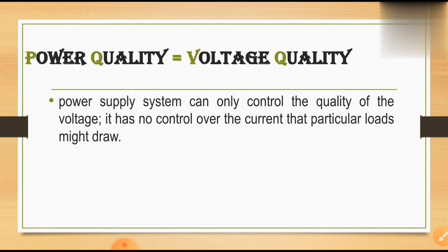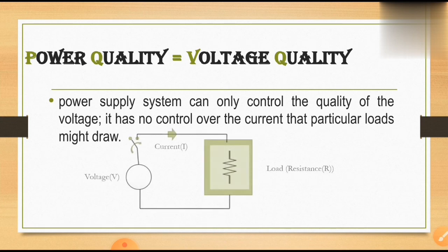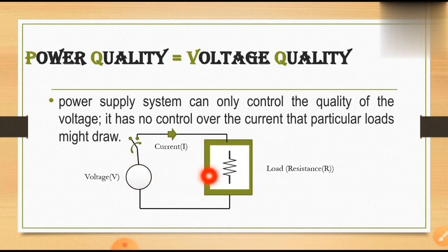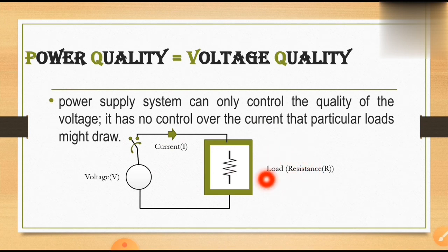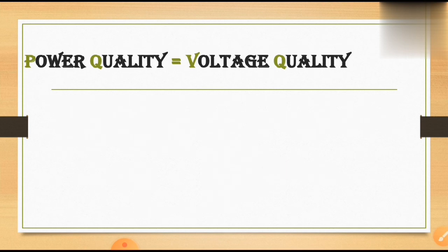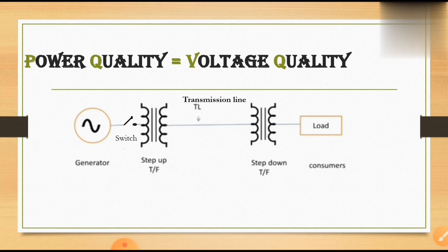The power supply system can only control the quality of the voltage — it has no control over the current that a particular load might draw. To explain this point, I am considering a small circuit having a voltage source and a resistance connected in a circuit. When the switch is closed, current passes through the circuit. This resistance is called a load in electrical technology.